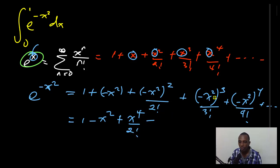This is going to be negative 1 to the power 3, that's negative 1. This is x to the power 6 divided by 3 factorial. This is going to be plus x to the power 8 divided by 4 factorial, and so on.